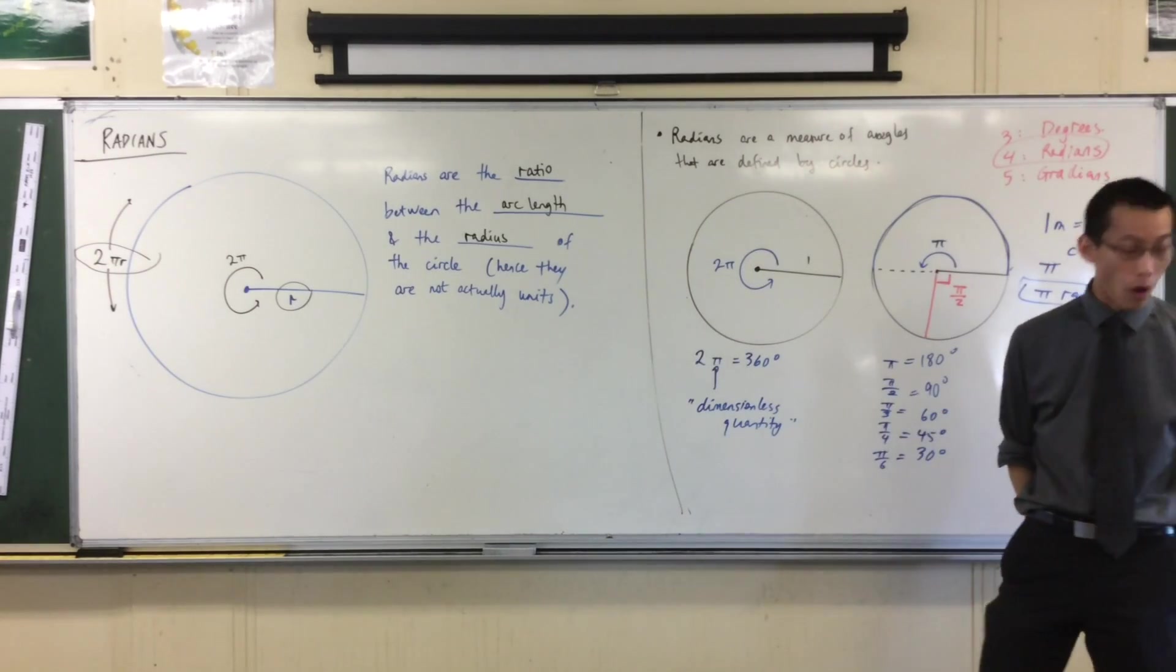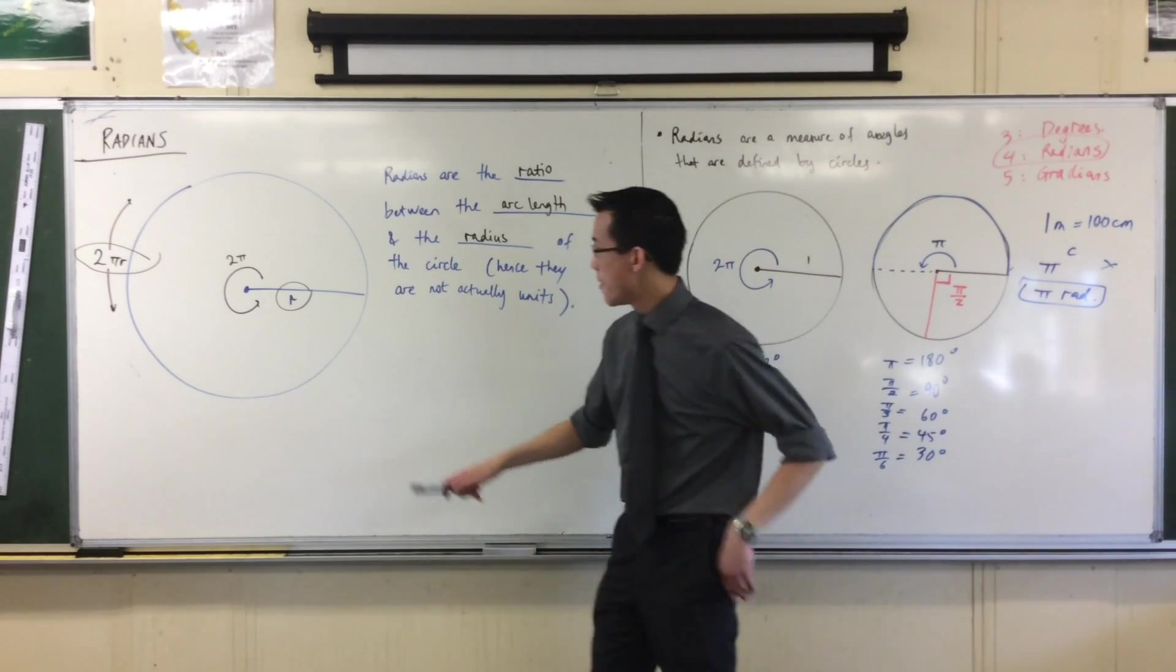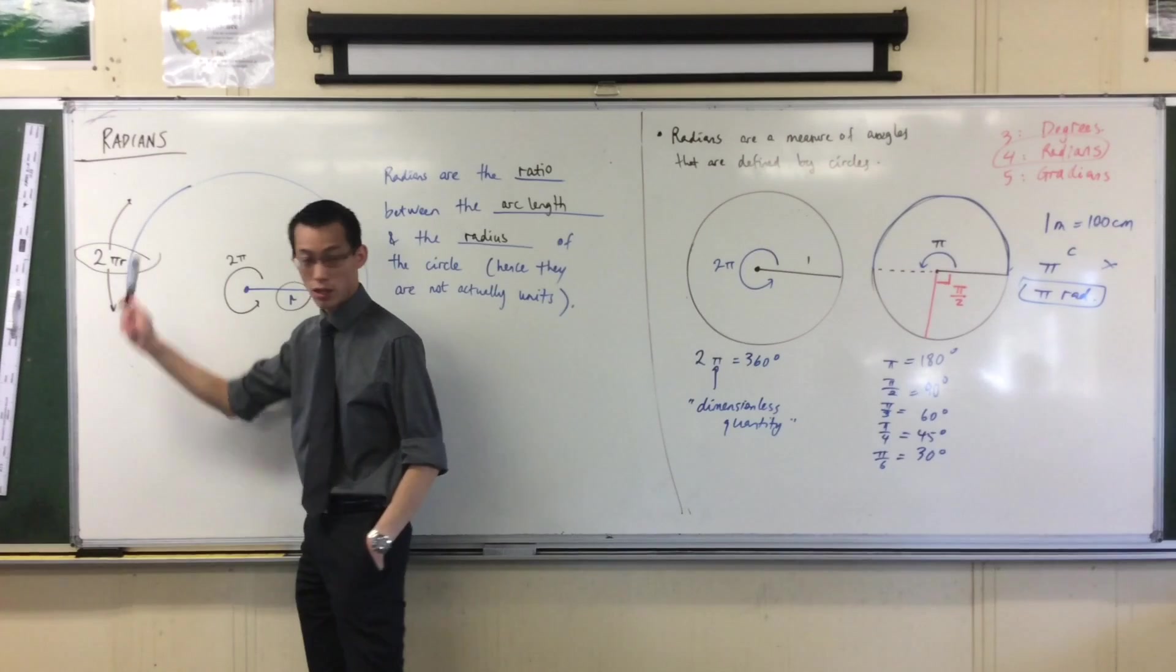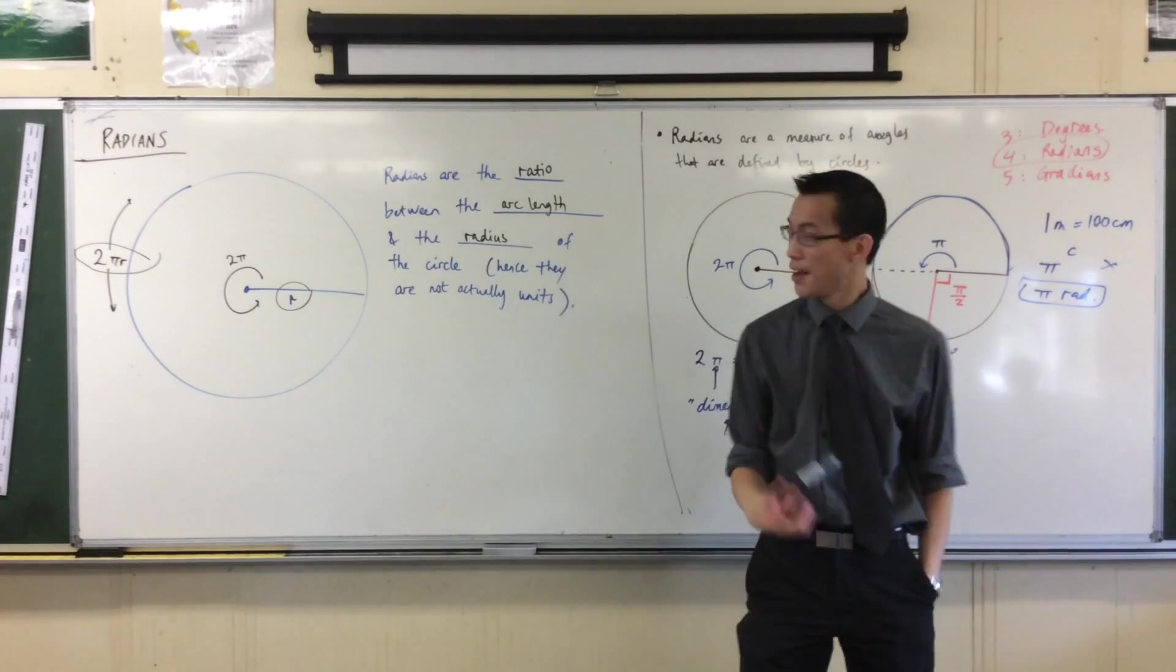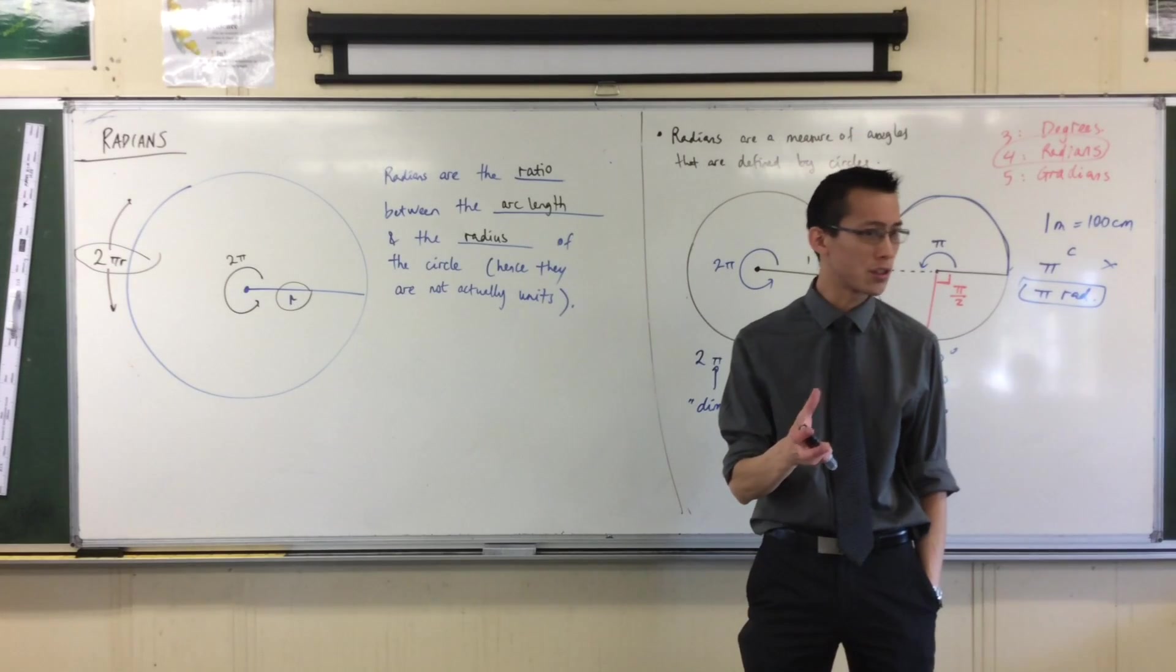And this radius and this circumference will still be in the same ratio. Because that's what it means for shapes to be similar, their lengths are in the same proportion.